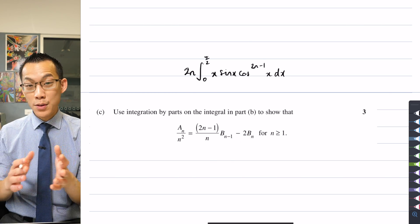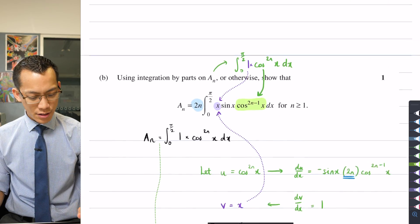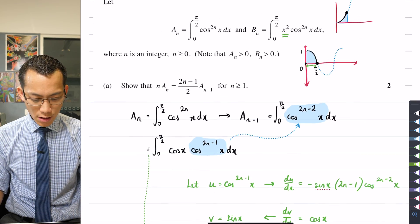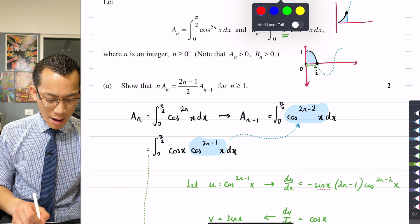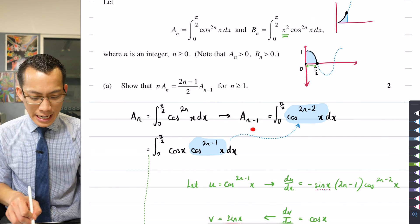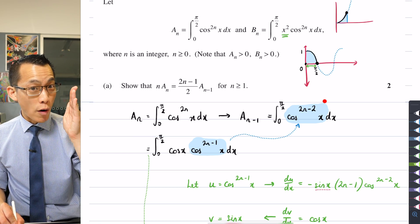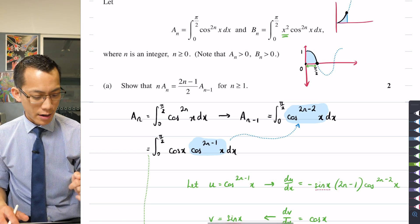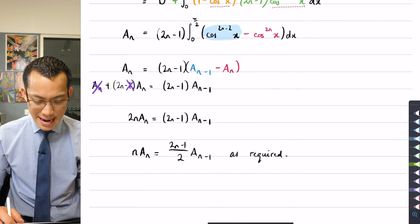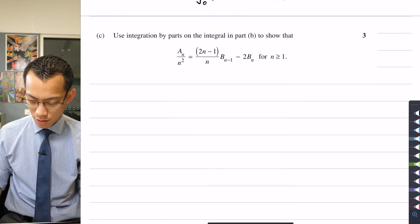I need to obviously know where I'm working toward. In a very similar way, do you see how in Part A I needed to get an A_{N-1}, so I wrote down what A_{N-1} was so it was very clear what direction I was headed in? I'm going to do exactly the same thing with my B_N terms so that I know where I'm working towards.